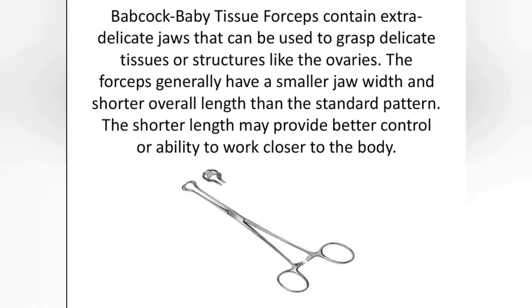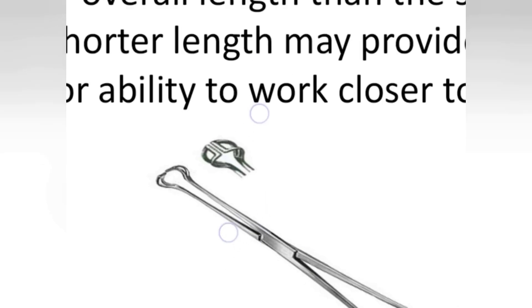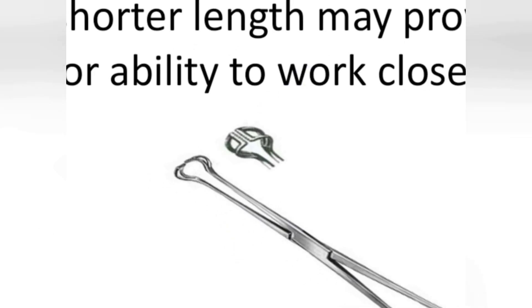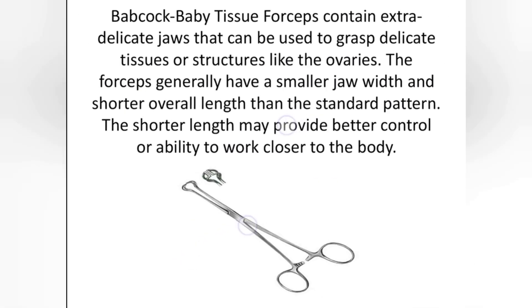The clue lies in the beak: Babcock is non-toothed, and Allis is toothed. You have to understand the difference — Babcock is for delicate structures. In oral surgery, we deal with mucosa and delicate structures, so Babcock would be the appropriate choice.